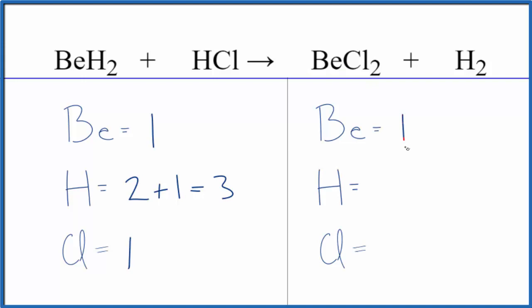Product side, we have one beryllium atom, two hydrogens, and two chlorine atoms.